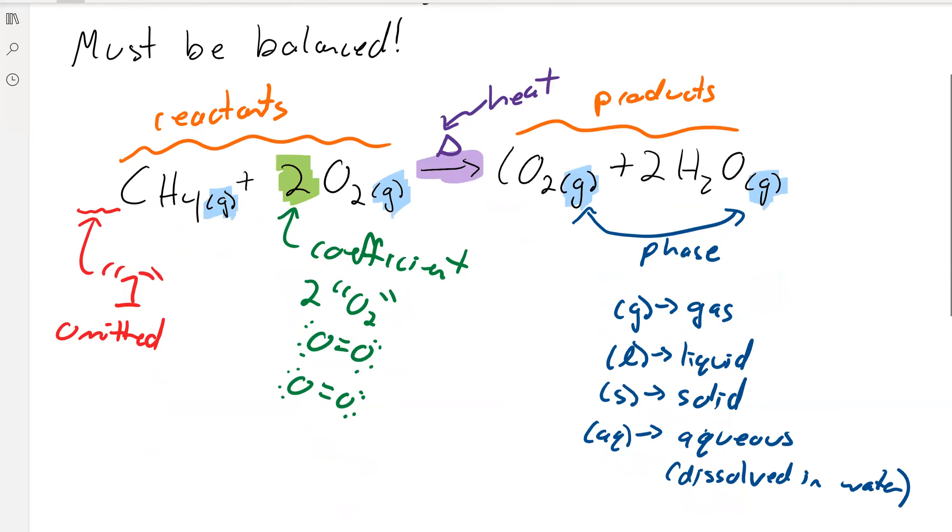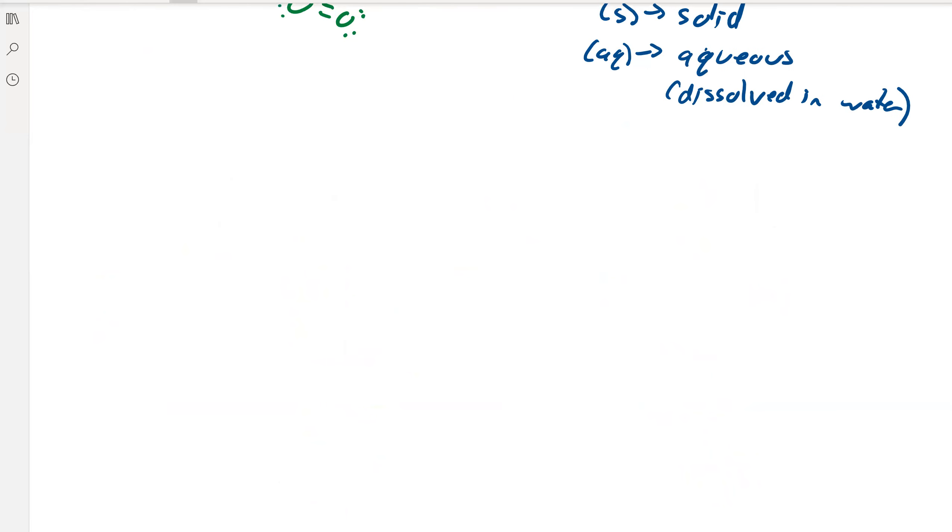So I'm just going to rewrite the chemical equation: CH4 + 2O2 goes to CO2 + 2H2O. And again, it must be balanced.